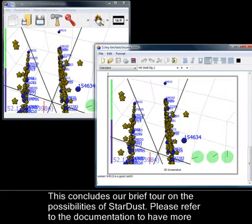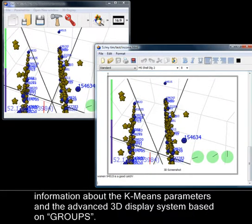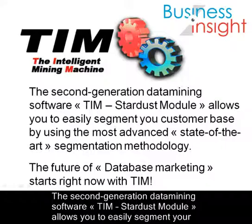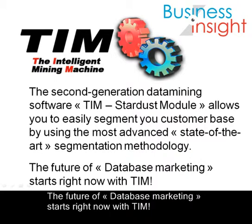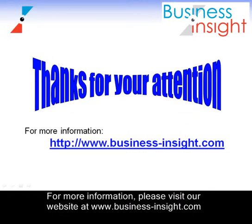This concludes our brief tour on the possibilities of Stardust. Please refer to the documentation to have more information about the K-Means parameters and the advanced 3D display system based on groups. The second generation data mining software, TIM Stardust Module, allows you to easily segment your customer base by using the most advanced state-of-the-art segmentation methodology. The future of database marketing starts right now with TIM. For more information, please visit our website at www.business-insight.com